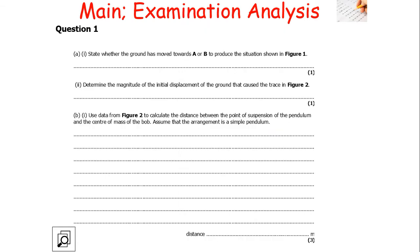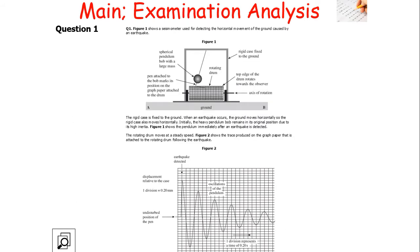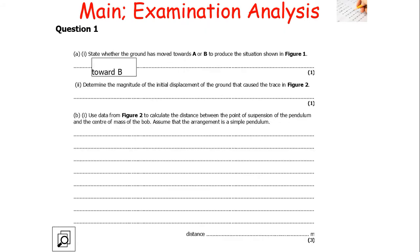The next question asks us to determine the magnitude of the initial displacement of the ground that caused the trace in figure 2. The initial displacement is going to be the amplitude of the wave. We look at how many divisions the amplitude spans and multiply by the unit per division. One division is 0.20 mm and there are 15 squares from equilibrium, so it's 15 times 0.20, giving 3 mm.